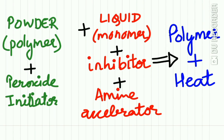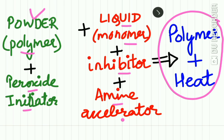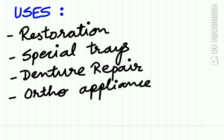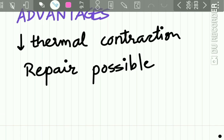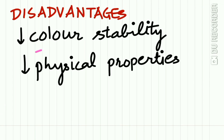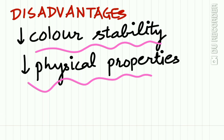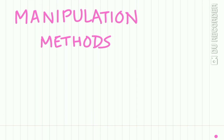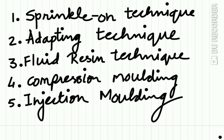In the polymerization reaction of chemically activated resins, the powder (polymer + benzoyl peroxide initiator) reacts with the liquid (monomer + inhibitor + amine accelerator) to produce polymer and heat of reaction. Uses: restorative material, preparation of special trays for impression taking, denture repair, and building orthodontic appliances. Advantages: less thermal contraction and repairability. Disadvantages: reduced color stability and lower physical properties compared to heat cure resins. Manipulation methods include the sprinkle-on technique, adapting technique, fluid resin technique, compression molding, and injection molding.